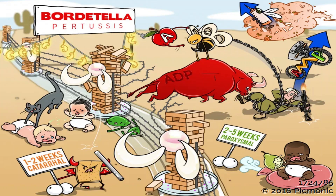Bordetella Pertussis is a Gram-negative bacteria because of its relatively thin peptidoglycan layer in the cell wall, shown here as gram-cracker-negative devil. Bordetella Pertussis is Coccobacillus — not a coccus which is spherical, not a bacillus which is rod-shaped, but a combination of both, shown here as coccoid rods.